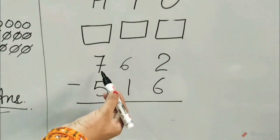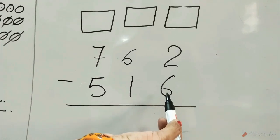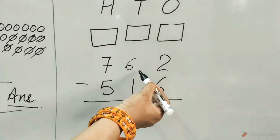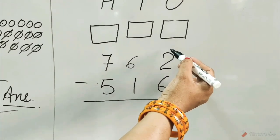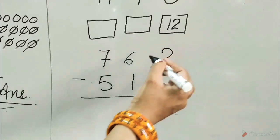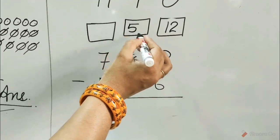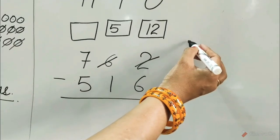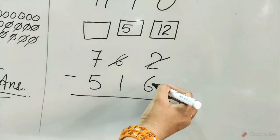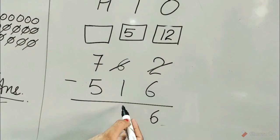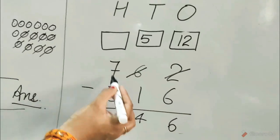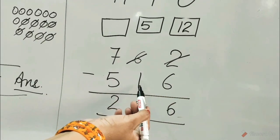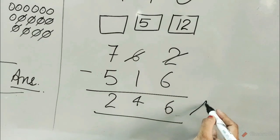Question number 8: 762 minus 516. 6 is bigger than 2, so regroup the ones. Borrow 1 ten from the tens column and add it to the 2 ones. 1 ten plus 2 ones is equal to 12 ones, and 5 tens remain in the tens column. Write 12 at the place of 2. Subtract the ones column: 12 minus 6 is equal to 6. 5 minus 1 is equal to 4. 7 minus 5 is equal to 2. Hence, 762 minus 516 is equal to 246. Answer.